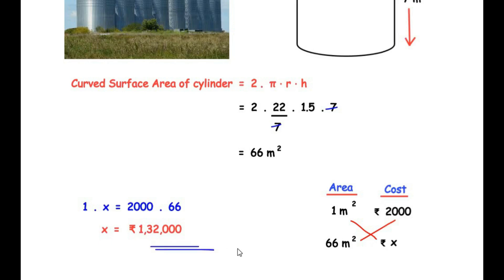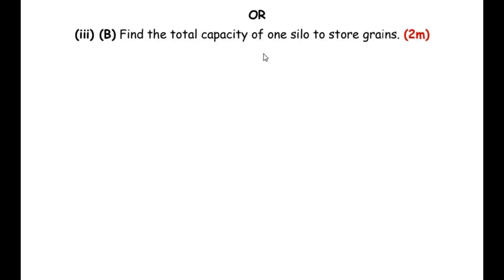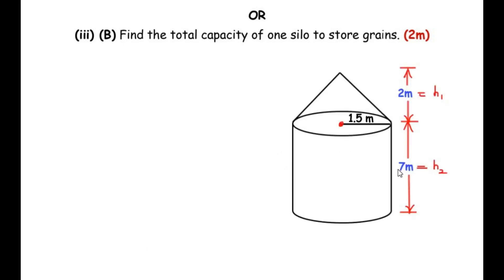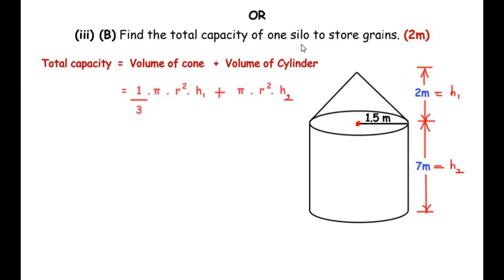Now let us move on to the OR question: find the total capacity of one silo to store grains. When they mention total capacity, we need to find the actual volume of one silo. The silo is made up of a cylinder and a cone. The height of the cone was given as 2 meters (h1) and height of the cylinder as 7 meters (h2). For the total capacity, we find the volume of the cone and add it to the volume of the cylinder.